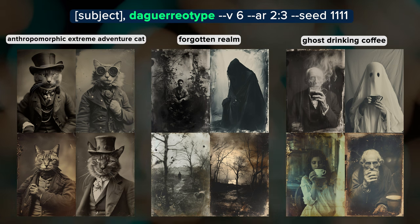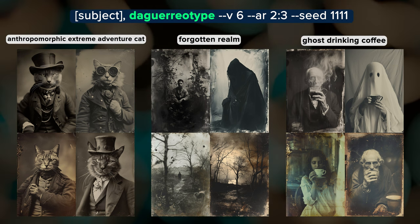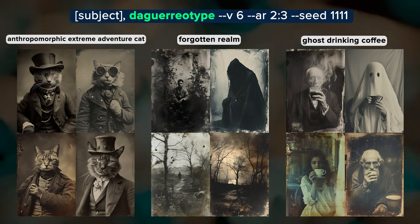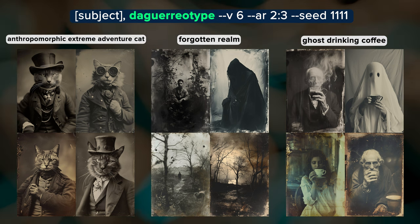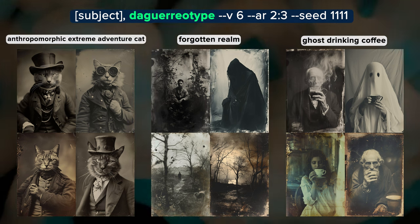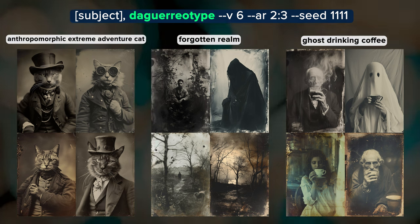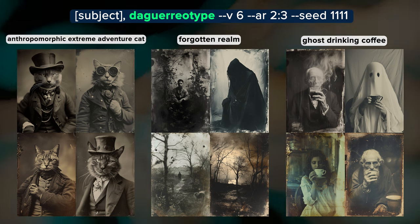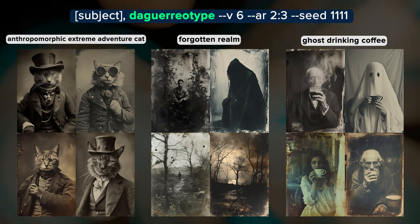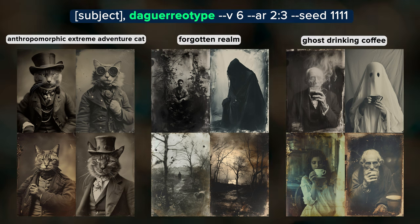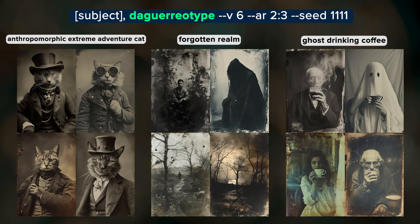Mr. Adventure Cat is now a very esteemed individual posing for his portrait. Forgotten Realm brings in trees and leaves for most of the results, along with a mysterious figure in a cloak. We're able to get someone drinking coffee in the last set of images, but not always a ghost.